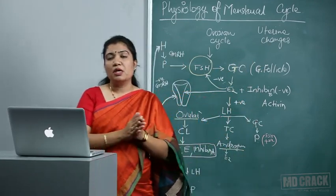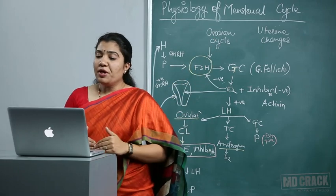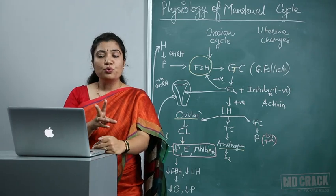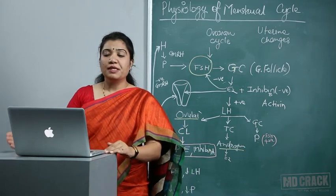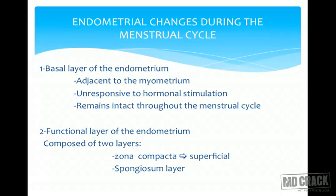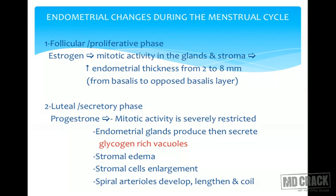Now focusing on endometrial changes during the menstrual cycle: the endometrium goes through two phases — proliferative and secretory. The basal layer of the endometrium, adjacent to the myometrium, is unresponsive to hormonal stimulation and remains intact throughout the cycle. What changes is the functional layer, composed of zona compacta and zona spongiosum. In the follicular or proliferative phase, estrogen causes mitotic activity in the glands and stroma, and endometrial thickness increases from 2 to 8 mm.